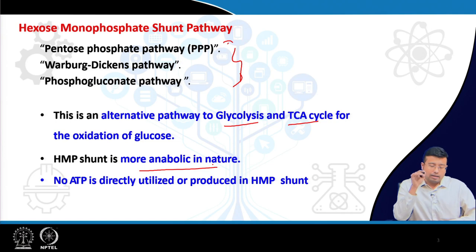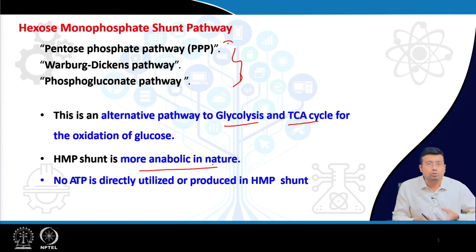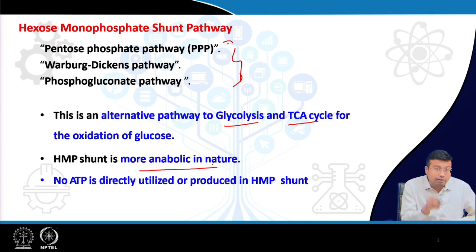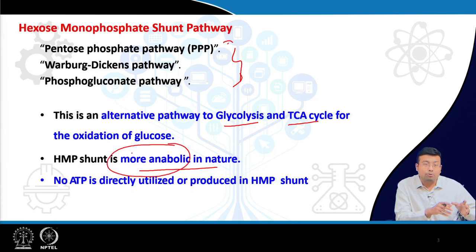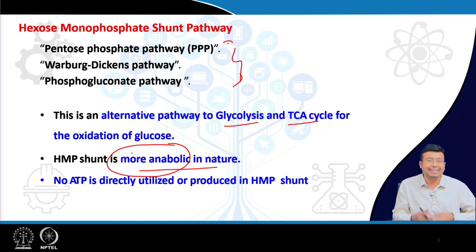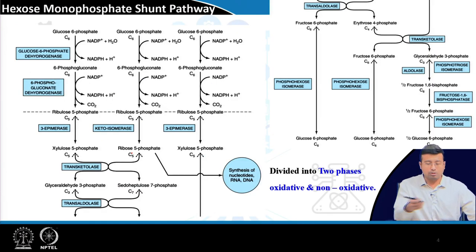Even though it is a pathway of oxidation of glucose — meaning the glucose molecule is ultimately broken down — it is more anabolic in nature. There is a catabolic component, but it is more anabolic because of the production of components like pentose and NADPH, which are further used to synthesize more components.